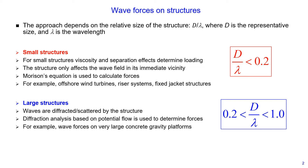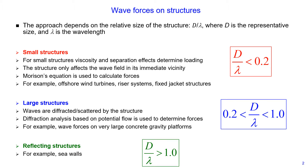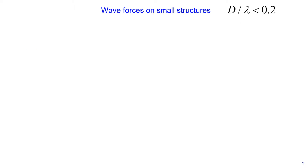Another type is reflecting structures, defined when the ratio D divided by lambda is greater than 1. An example of such structures includes sea walls. In this lecture, we focus on wave-induced forces acting on small structures — where the ratio of representative size divided by wavelength is less than 0.2 — because this is applicable for wave energy devices.